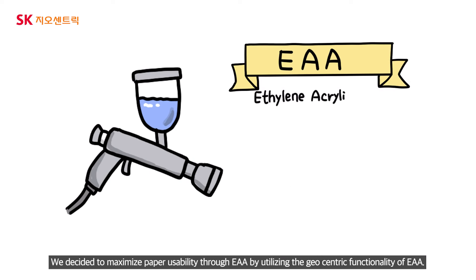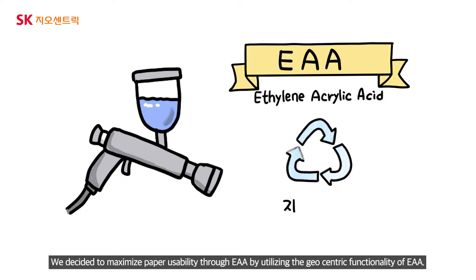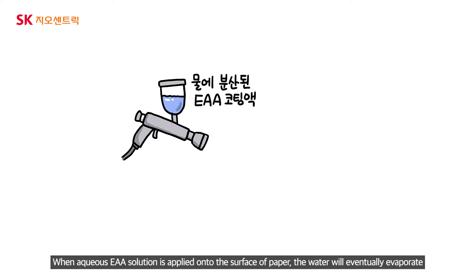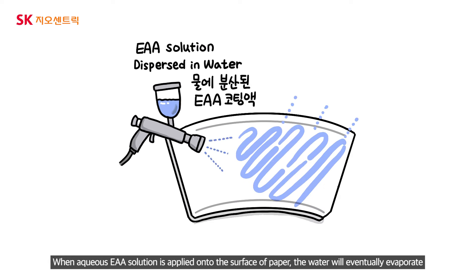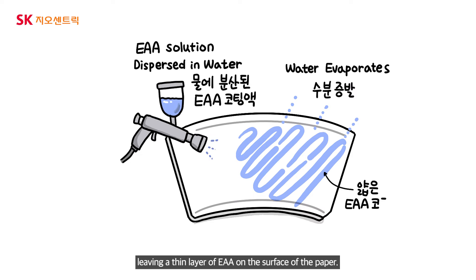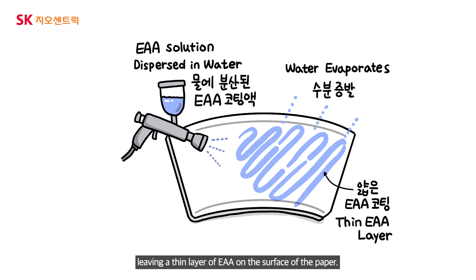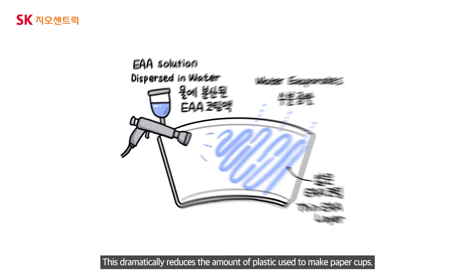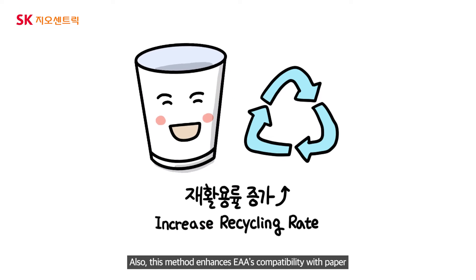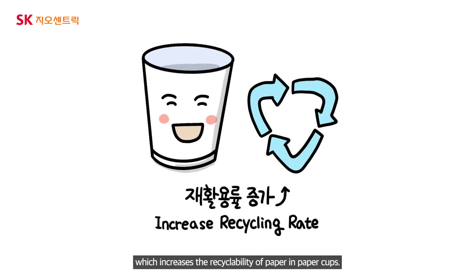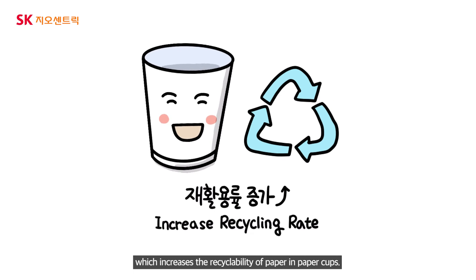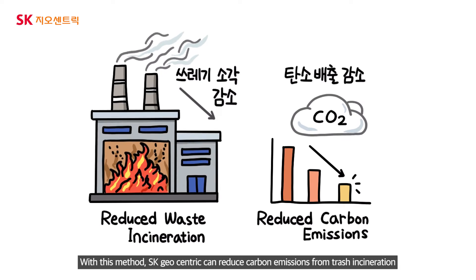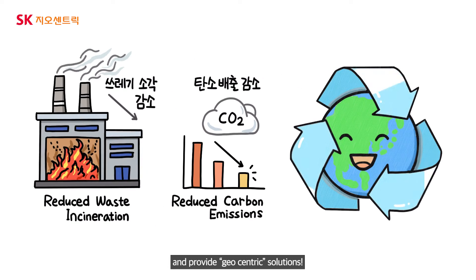SK Geocentric decided to maximize paper usability by utilizing the eco-friendly functionality of EAA. When aqueous EAA solution is applied onto the surface of paper, the water will eventually evaporate, leaving a thin layer of EAA on the surface of the paper. This dramatically reduces the amount of plastic used to make paper cups. This method also enhances EAA's compatibility with paper, increasing the recyclability of paper cups. With this approach, SK Geocentric can reduce carbon emissions from trash incineration and provide eco-friendly solutions.